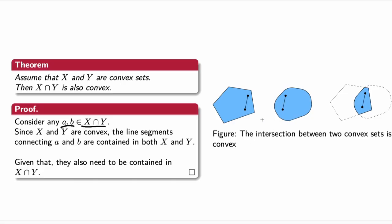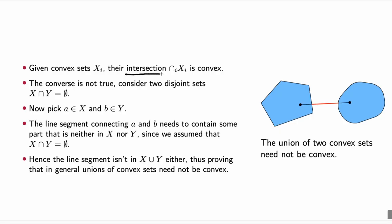Here we see an example with sets A and B, and here is A intersected with B. This theorem can be generalized to the intersection of any number of convex sets, just by induction — by adding one set at a time, you get a new convex set, then add another, and so on.